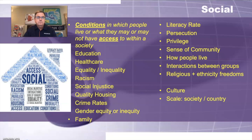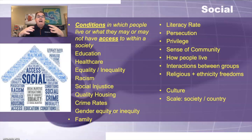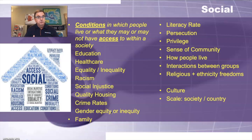Social relates to the conditions in which people live or what they may or may not have access to within a society. This is similar to culture, but the super safe zone for social is: do people have access to education? Do people have access to healthcare? Is there inequality between ethnicity and groups of people? Is racism present? Is there social injustice? Do people have access to quality housing? Crime rates are a good one. Gender equity or inequity is a social issue. One of the most common elements is the structure of family — that's a big social element and a safe area.